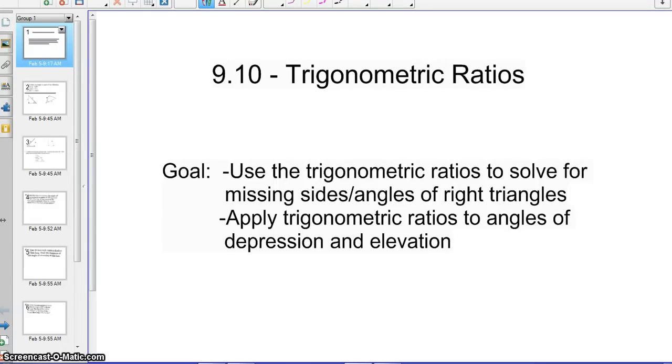Today we are going to talk about section 9.10. We're going to use our ratios to solve for the missing sides and angles of right triangles. We're also going to use our ratios to find angles of elevation and depression. We're going to be talking about word problems and being able to draw the appropriate diagram and then solve for the missing piece of information.